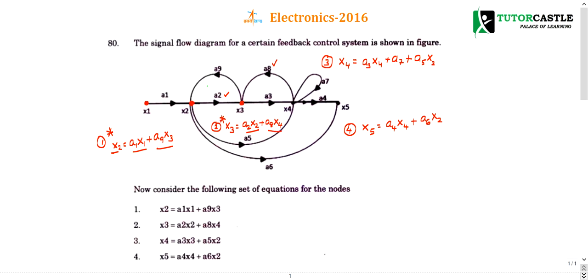Now let us go for the next node, that is x4. At x4, what are the incoming nodes? a3 gain, a5, and a7, that's it.